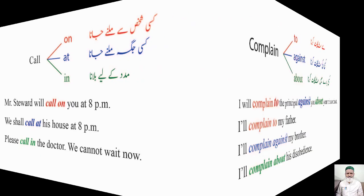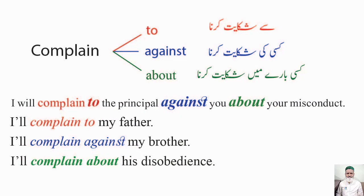Then comes complain — complain (verb) اور complaint (noun) میں فرق یاد رہے۔ Complain کے ساتھ 'to'، 'against'، اور 'about' تینوں آتے ہیں۔ Complain to — آپ کس سے شکایت کر رہے ہیں؛ complain against — آپ کس کی شکایت کر رہے ہیں؛ اور complain about — آپ کس معاملے کے بارے میں شکایت کر رہے ہیں۔ ایک ہی مثال میں تینوں prepositions واضح ہو جاتے ہیں۔